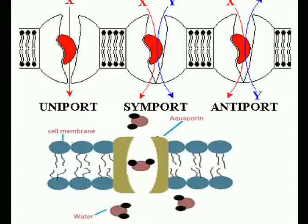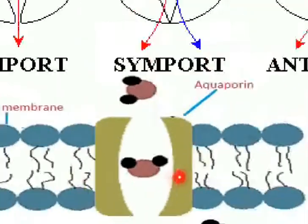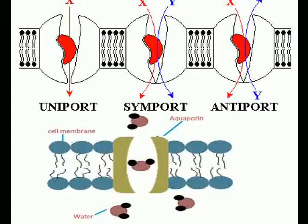All molecules in uniport move independently. Proteins form channels in the membrane for molecules to pass through; some channels are always open, others can be opened and closed, and some are large, allowing a variety of molecules to cross. Aquaporins are proteins that form large pores in the outer membrane of plastids, mitochondria, and some bacteria, allowing molecules up to the size of small proteins to pass through them. These are the apparatus available to facilitate the diffusion process.